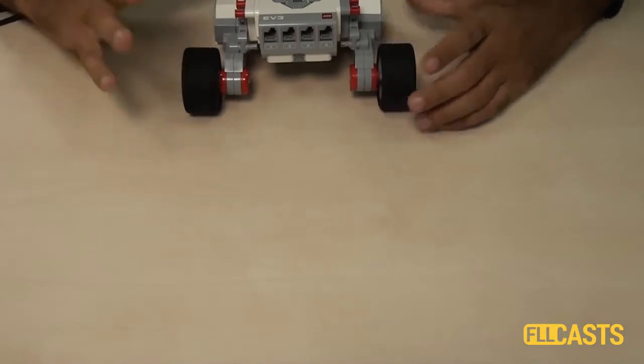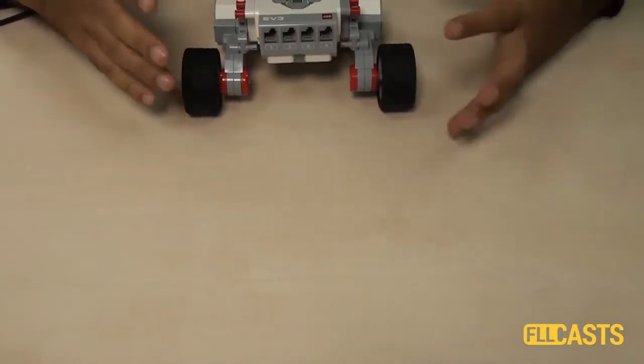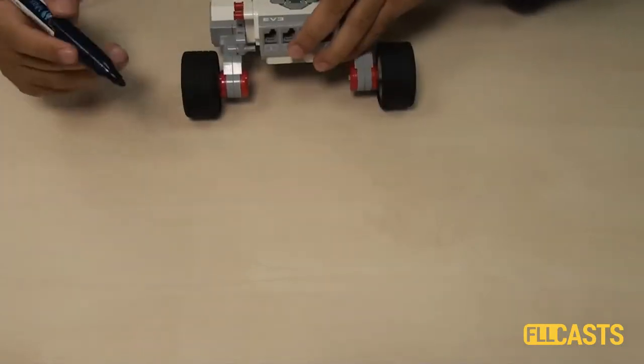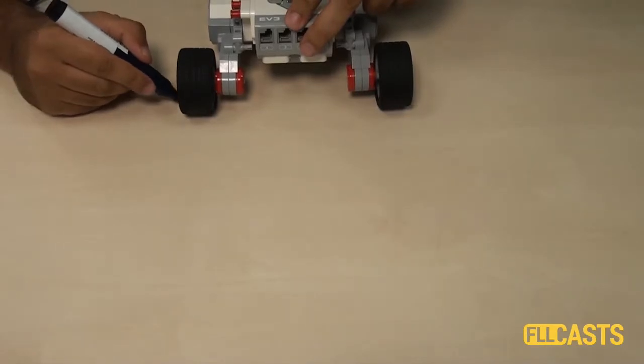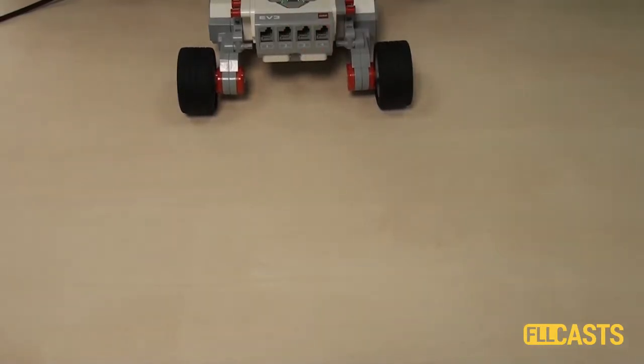Let's now measure how imprecise actually the whole movement is. I'll take a marker and I mark the starting position of the robot. It's here.